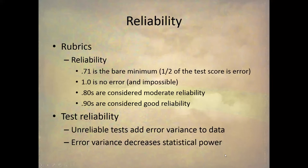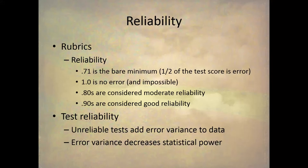All of these reliability methods will give you a number between 0 and 1, and you can treat that as a correlation coefficient. In fact, in some cases it actually is a correlation coefficient, or you can treat Cronbach's alpha as if it were a correlation. So we're going to get a number from 0 to 1 — how do we evaluate that?